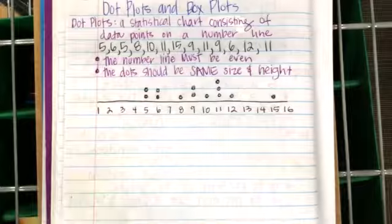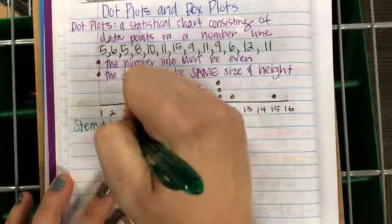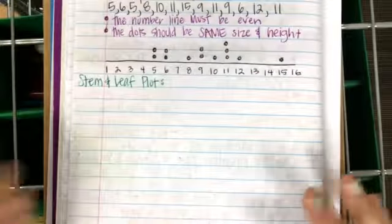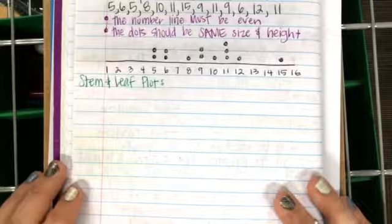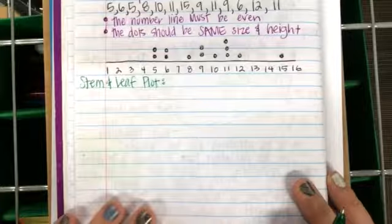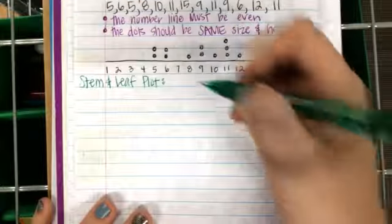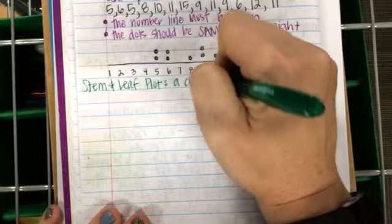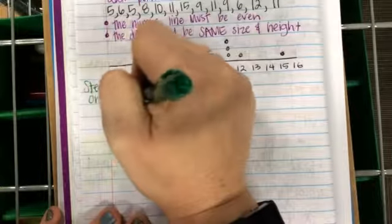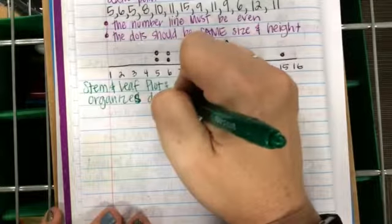Another really common way of showing data is something called a stem and leaf plot. In my opinion it's the most underrated of all graphs — I really enjoy stem and leaf plots. I think they show data really well. A stem and leaf plot is a chart that organizes data by place value.